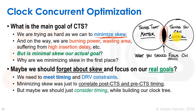Our real goals are not skew. Our real goals are meeting timing — we have our setup and hold paths and equations that we want to meet. We also want to meet our DRV constraints: DRV being design rule violations, like maximum fan-out, maximum capacitance, maximum transition, and so forth. Those are the things we want to meet on our clock tree.